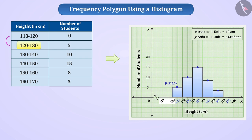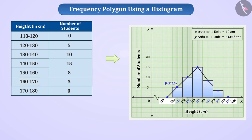That is, the height of any student is not in this class interval. Similarly, we also assume that after the class interval 160 to 170, there is an imaginary interval of 170 to 180 and its frequency is 0. We will mark their midpoints. Now, we will connect all midpoints with line segments.